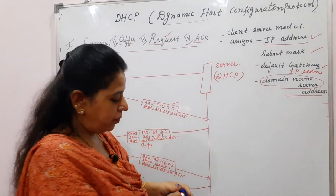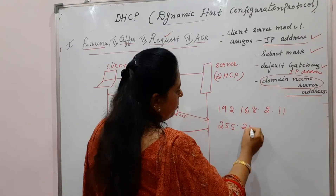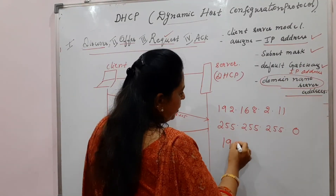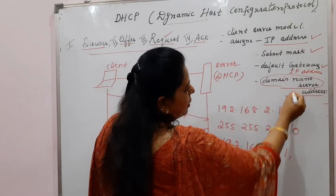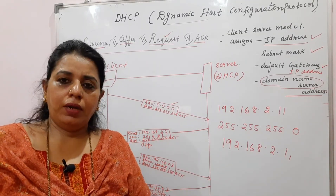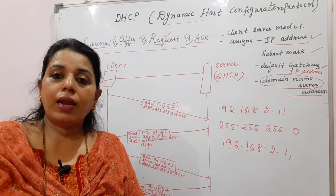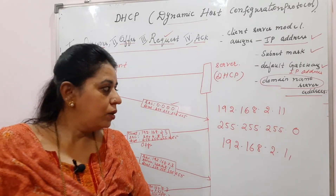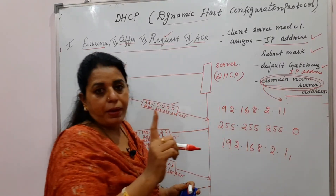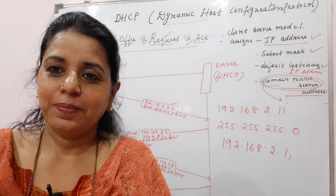In your device you can clearly see all four components: the assigned IP address, the subnet mask (for example, a Class C address), the default router's IP address, and the IP address of the domain name server. The domain name server is essential because when you search a website, you type a domain name rather than an IP address — the DNS maps the domain name to its IP address. Sometimes you may see two DNS IP addresses listed. This concludes the concept of DHCP. Thank you, take care.